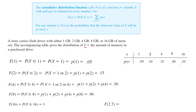Now if someone asks you to find F(2.7) — we don't have 2.7, we have 1, 2, 4, 8, and 16. You are finding the probability that Y is less than or equal to 2.7, which is the probability that Y is less than or equal to 2. You round down to 2, not up to 4, because anything less than or equal to 2.7 that exists in our set is covered by F(2), which is 15%. So F(2.7) equals F(2) — with a discrete random variable, we have to make these adjustments.